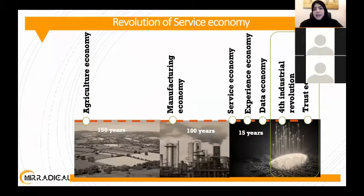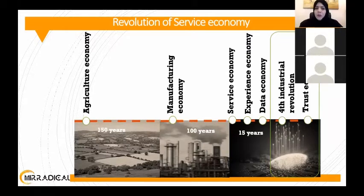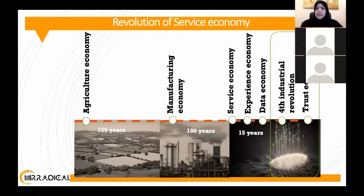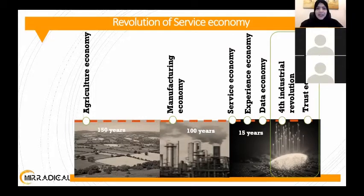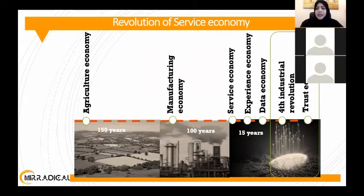The revolution of the service economy is not new — it started with the agricultural economy, moving toward manufacturing, then service economy and data economy. Now in the fourth industrial revolution we have innovation with artificial intelligence and robotics, and even more, a trust economy. Having so much information and data doesn't make it easier — it's more challenging to gain the trust of the public. We'll harness technology and knowledge to design that information.